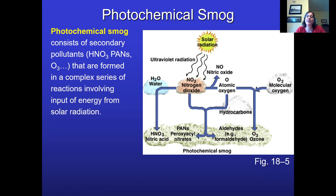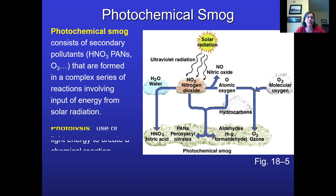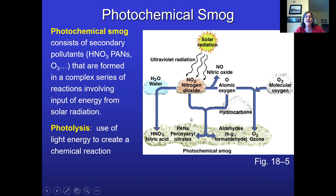In Seattle, on a nice sunny day, if we get sunny weather for a long period in summer, Seattle can start to get smoggy. Photolysis is just another word for using light energy to create a chemical reaction — sunlight basically acts as a catalyst. And you can see all of these compounds that can be produced, which I don't even want to try to pronounce all of them.